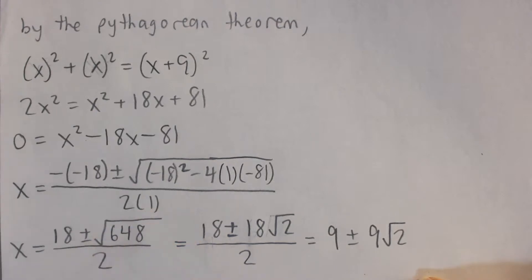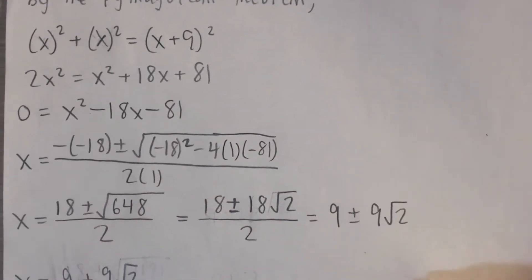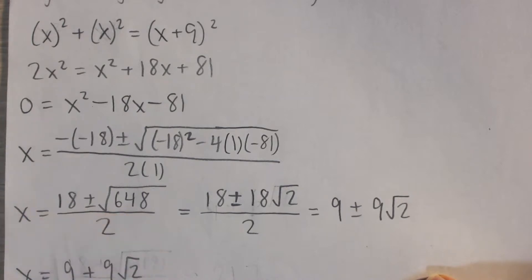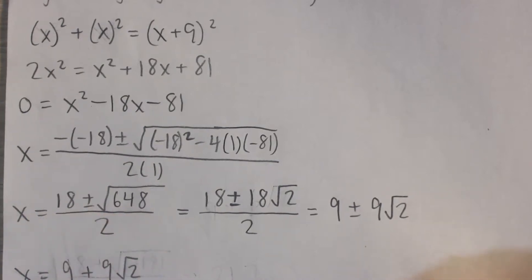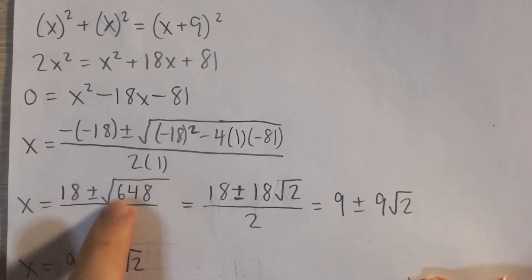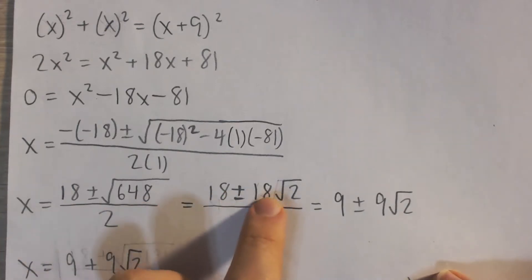And if you simplify this, you're going to get 18 plus or minus square root of 648 all over 2. You can actually simplify this radical, factor out an 18 squared, and so it's going to be 18 times square root of 2.